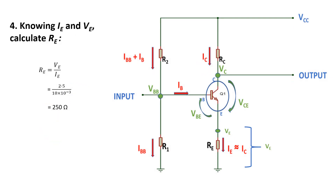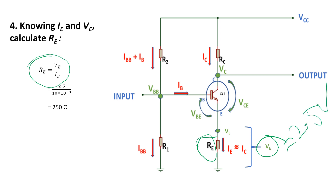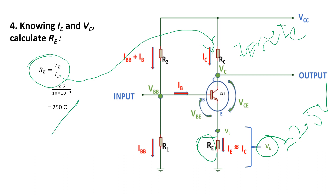Step number four: now we need to calculate the value for RE. From this equation we can easily calculate RE because we know VE is 2.5 volts, which we assumed in the previous steps, and IE is equivalent to IC, which we also know. So from this equation we easily calculate RE is 250 ohms.